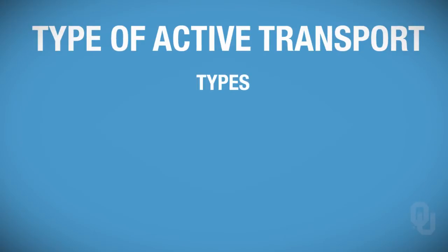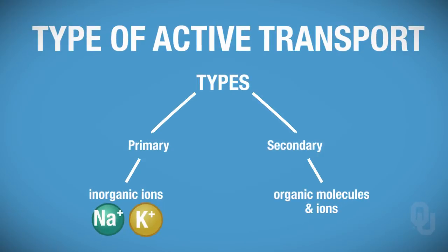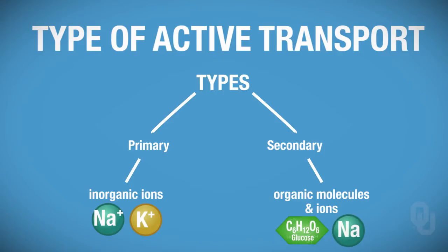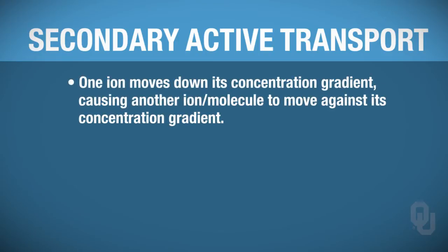We're going to be focusing on secondary active transport, which involves organic molecules such as glucose and ions such as sodium. In secondary active transport, one ion moves down its concentration gradient—meaning from a high concentration to a low concentration—and that causes another ion or molecule to move against its gradient.